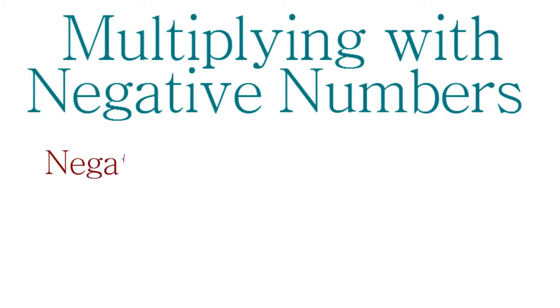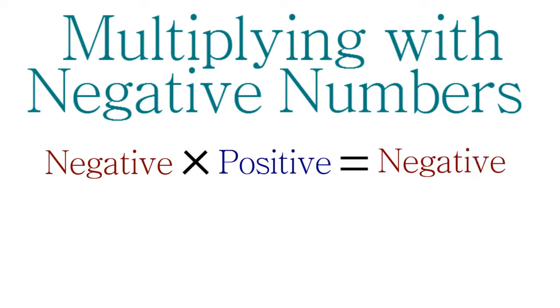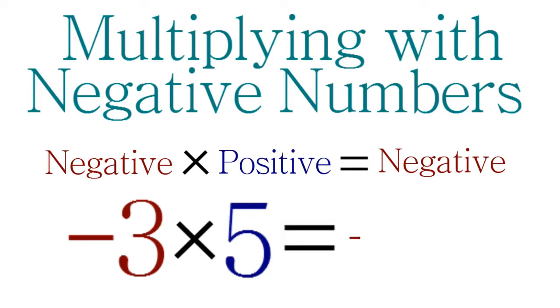When you multiply a negative number by a positive number, the result is always negative. For example, suppose you want to multiply -3 × 5. You're multiplying a negative number by a positive number, so the answer is negative. To find the answer,